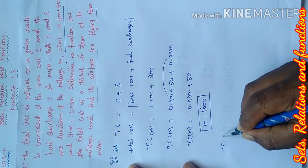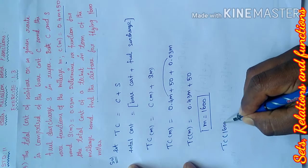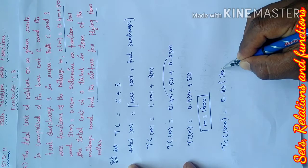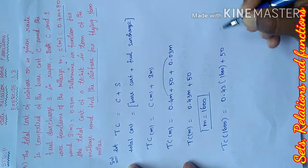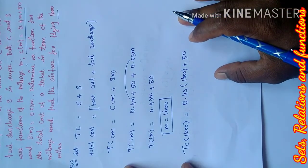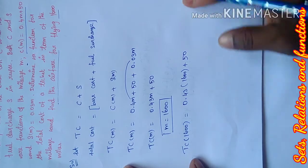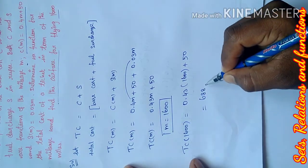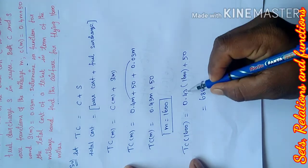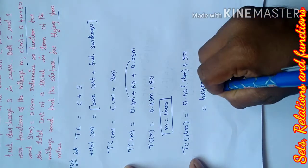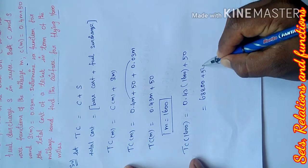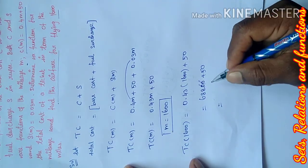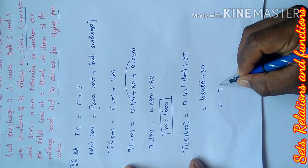Therefore, TC of 1600 equals 0.43 times 1600 plus 50. This equals 688 plus 50, which equals 738 rupees.